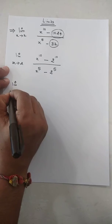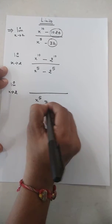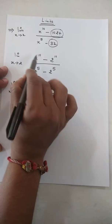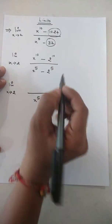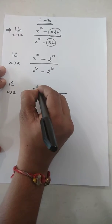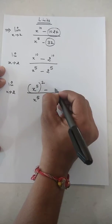So now in the next step, limits x tends to 2, denominator will remain as it is only, but for the numerator to apply that a square minus b square formula, we can write this thing as x raised to 5 whole squared minus 2 raised to 5 whole squared.